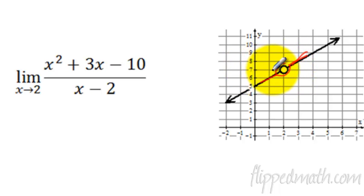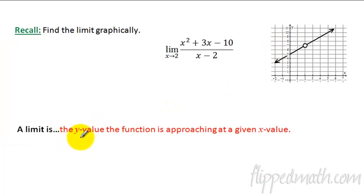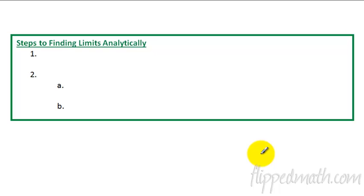And it is that point right there, which is 7. So if you remember, the limit is the y value, important stuff right there. The y value, the function is approaching at a given x value. So for this one, it would equal 7. That's the limit. Now, how could we do this if we didn't have a graph? That's what we're going to be talking about.